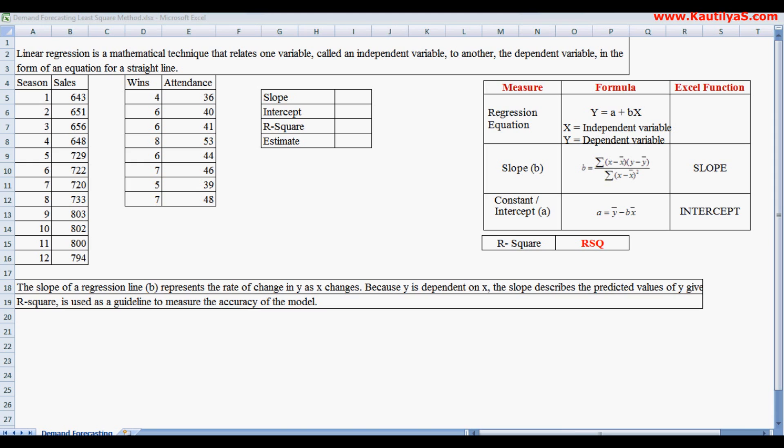This video explains the demand forecasting method using least squares method. Least squares method, popularly known as regression analysis, is calculated using an equation Y equals A plus BX. Y is the dependent variable and A is a constant or intercept when X, the independent variable, is zero.